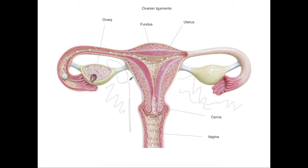Then we have the suspensory ligament of the ovary, which is important because it connects the ovary to the lateral abdominal wall. Its functional importance is that it contains all the vessels — the ovarian artery, the ovarian nerve, the lymphatic vessels for lymphatic drainage, and also the nerves.